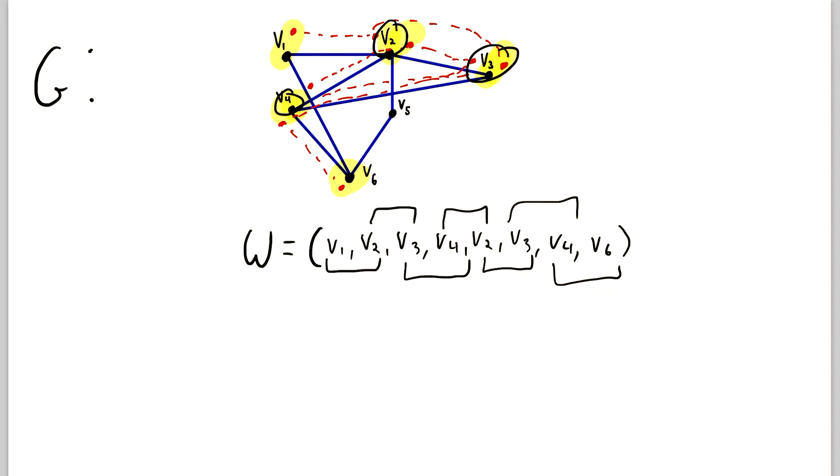So let's talk a little bit of vocabulary real quick. Every vertex that we traverse in our walk, as well as every edge, can be said to lie on the walk W. So for example, the vertex V1 lies on W, and the edge V4 V2 also lies on W. We could also describe our walk W as being a V1 V6 walk, because we go from V1 to V6 in the walk.